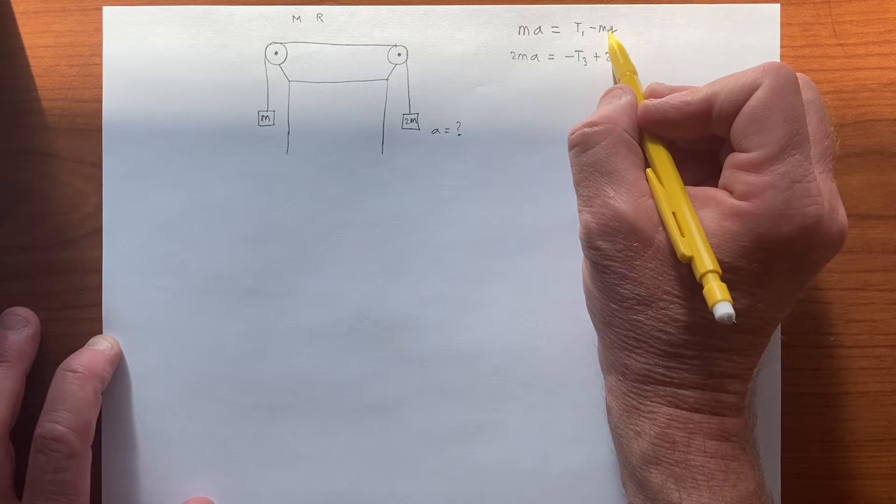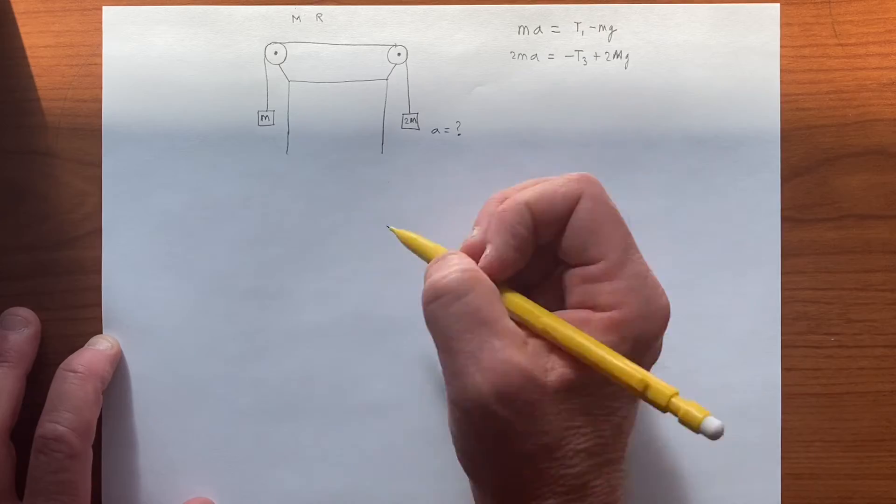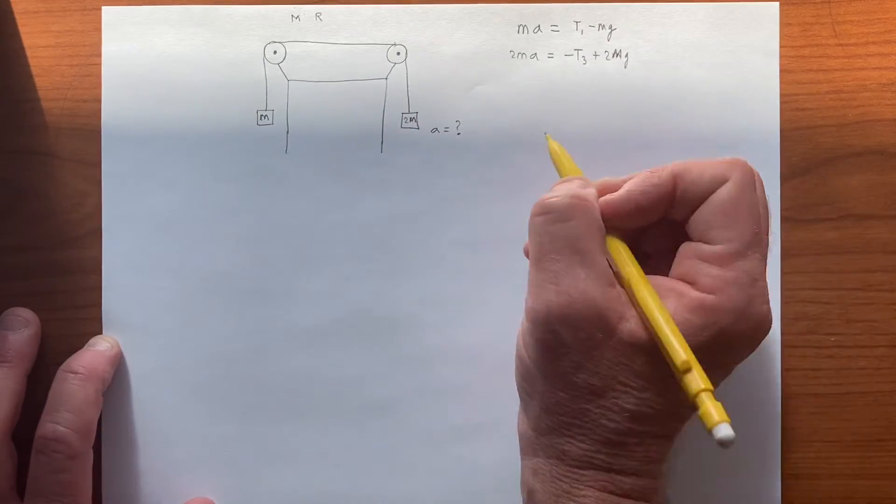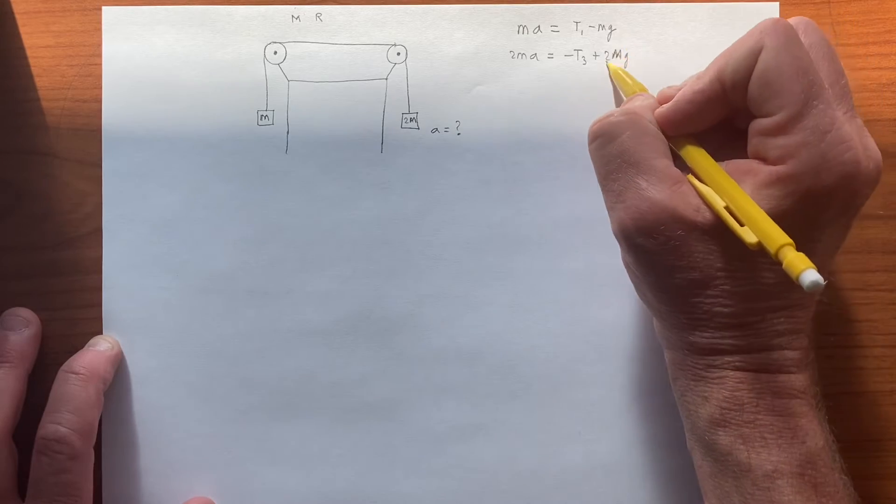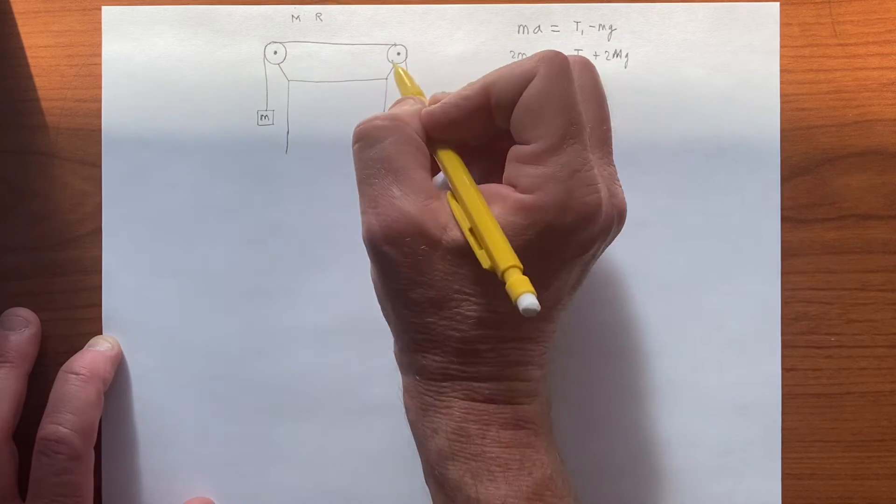2mg, opposite of the force over here, because it's pulling in a different direction. It's really a one-dimensional system, and so there's really a left and a right. And so to the right is positive, and to the left is negative.